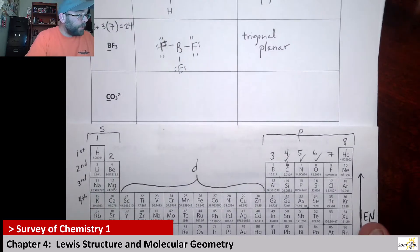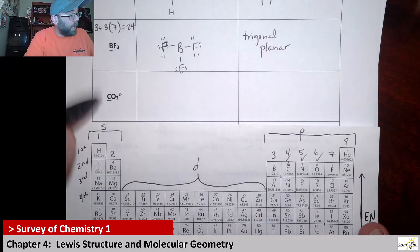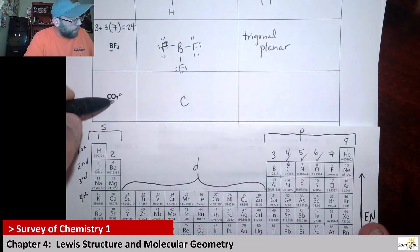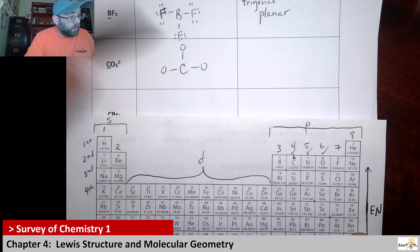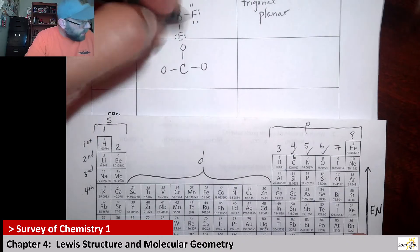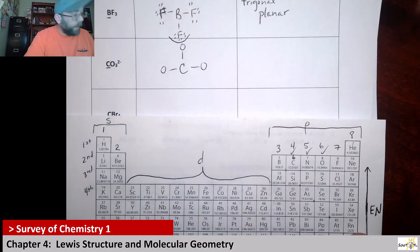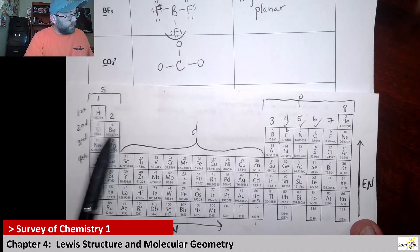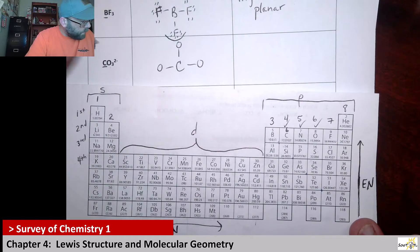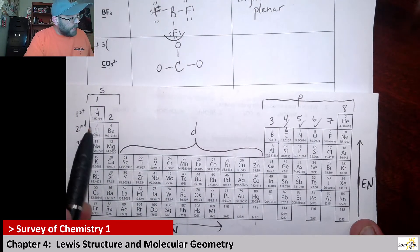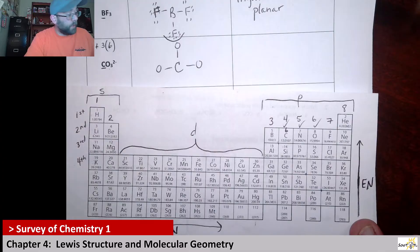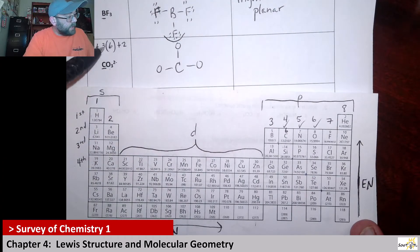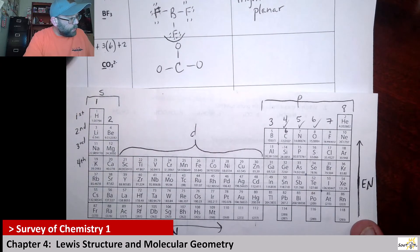Next up we have CO3²⁻. This is the carbonate polyatomic ion. Carbon is the central atom and I'm going to put those three oxygens with one bond each. Now let's count our valence electrons: carbon has four, and I have three oxygens each with six, so three times six is eighteen. Carbonate has a negative two charge, so I need to add two additional electrons. That gives us twenty-four total.